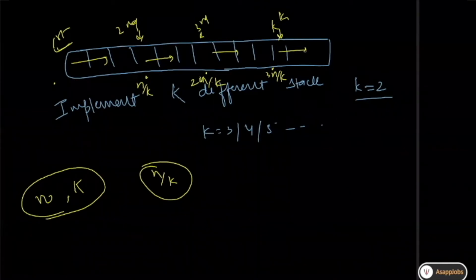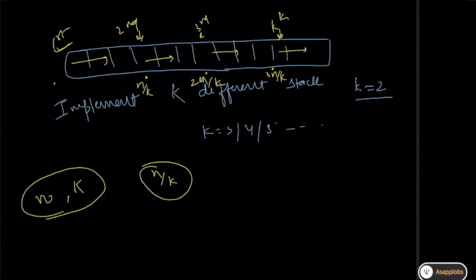It's just that programmatically how you write it becomes a little complicated. We can check two things: one is your concept about the stack, and second, how you write things programmatically — how you handle different boundary conditions, whether the code is clean or not. This program tests not only your data structure skill but also your programmatic skill — how cleanly you can write the code.